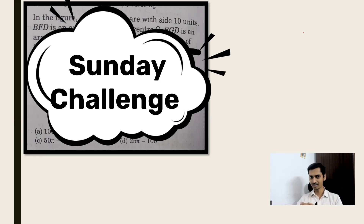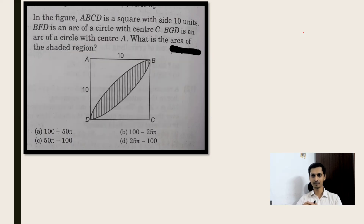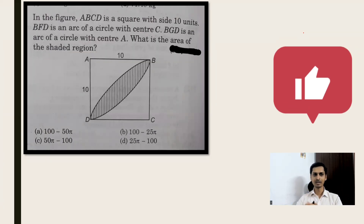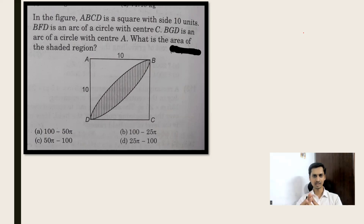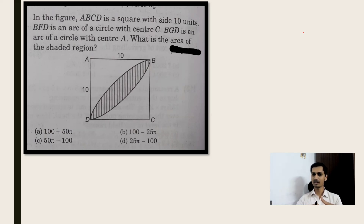Welcome to Sunday Problem Solving Challenge — a weekly topic for competitive exam preparation. Today I have a geometric question that seems a little challenging. In the figure, ABCD is a square with side 10 units. BFD is an arc of a circle with center C, and BGD is an arc of a circle with center A. What is the area of the shaded region? You have four options. If you want to practice, pause the video and try to come up with the answer, and don't forget to put your answer in the comments below.